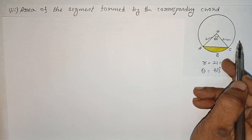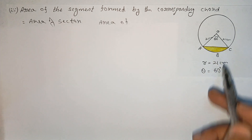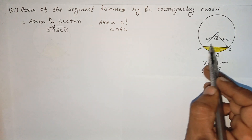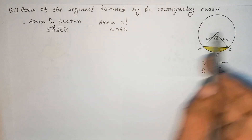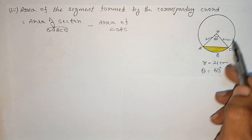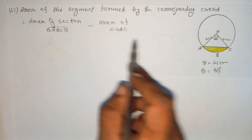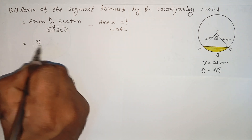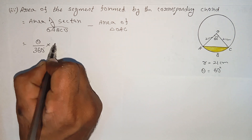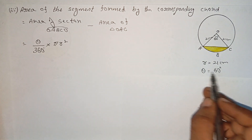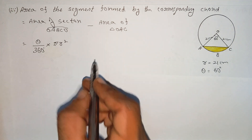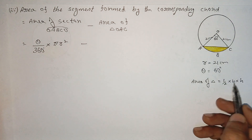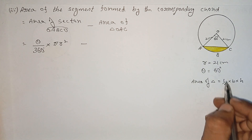Area of segment equals area of sector minus area of triangle OAC. So the area of the segment is: area of sector minus area of triangle O, A, C. The formula for area of sector is theta divided by 360 degrees into pi r squared. The formula for area of triangle is half into base into height.